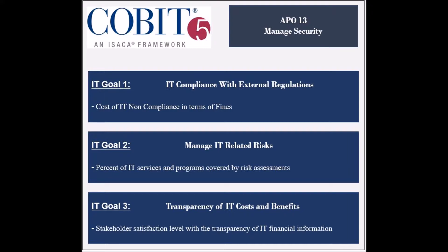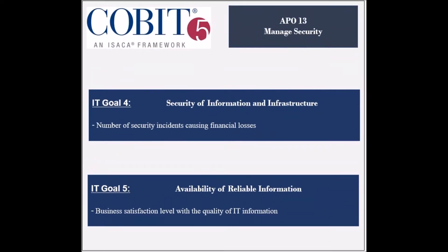The transparency goal's achievement is measured by the percent of investments with clear expected IT costs and benefits, and by the stakeholder satisfaction level with the transparency and accuracy of IT financial information. The fourth supported goal is to ensure the security of information and infrastructure. Its achievement is measured by the number of security incidents causing financial losses and by the frequency of security assessments against the latest standards.